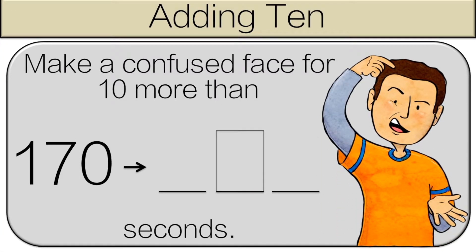We see the number 170. What is 10 more? 10 more than 170 is 180. And what number is in the box? 8. So, you have to make a confused face for 8 seconds.